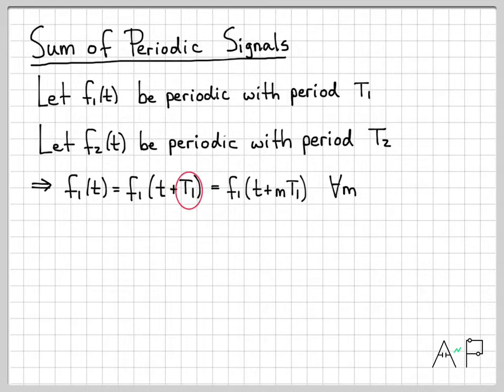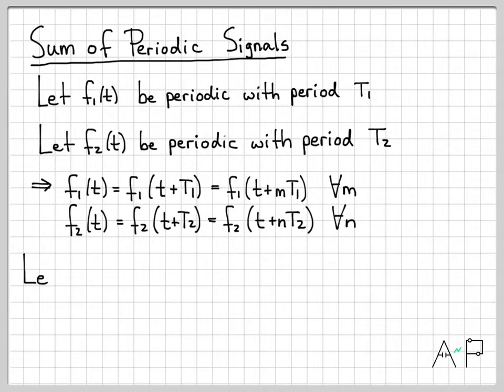Whether I go forward T1 or 2T1 or 3T1, I always get back exactly where I start in the sequence. This holds not only for all time but also for all integers m. Similarly, f2(t) is periodic with period T2, equal to f2(t + nT2), and this holds for all n.